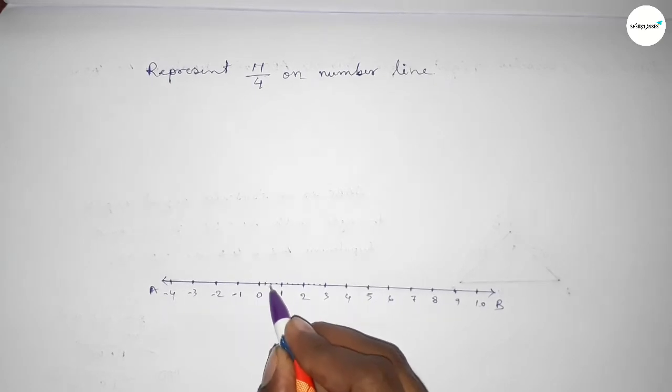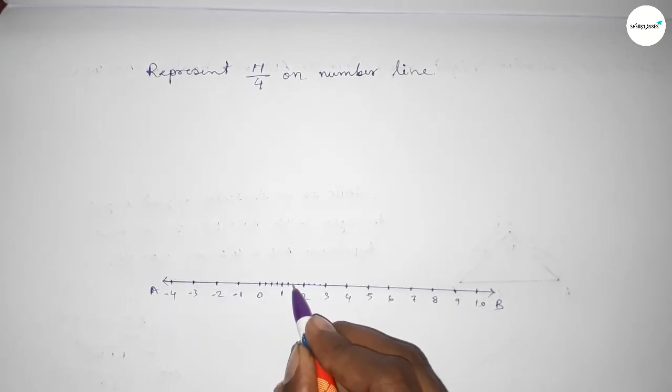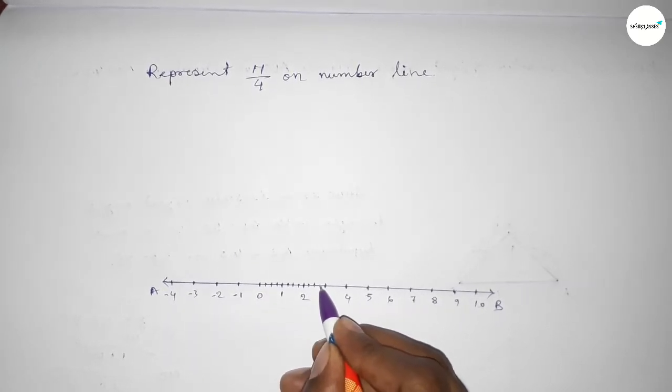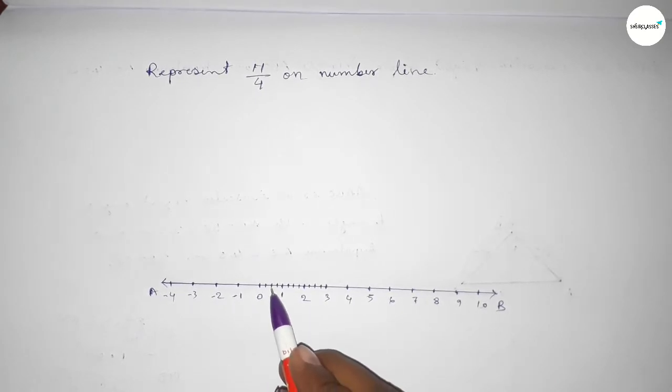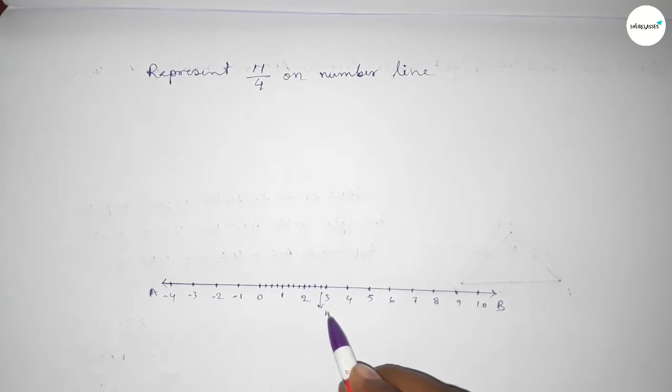Now mark the numbers with deep color to understand perfectly. So this is 1 over 4, 2 over 4, 3 over 4, 4 over 4, 5 over 4, 6 over 4, 7 over 4, 8 over 4, 9 over 4, 10 over 4, 11 over 4. So this is 11 over 4.